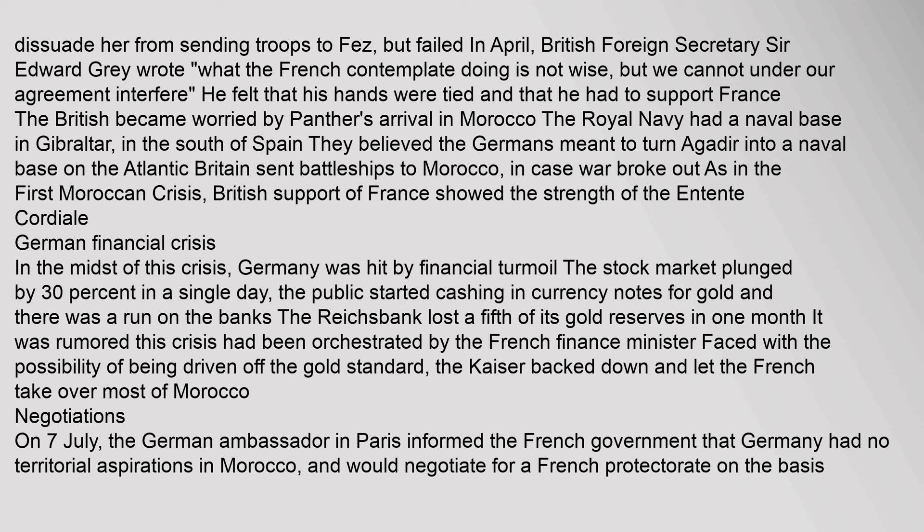In the midst of this crisis, Germany was hit by financial turmoil. The stock market plunged by 30% in a single day, the public started cashing in currency notes for gold, and there was a run on the banks. The Reichsbank lost a fifth of its gold reserves in one month. It was rumoured this crisis had been orchestrated by the French finance minister. Faced with the possibility of being driven off the gold standard, the Kaiser backed down and let the French take over most of Morocco.